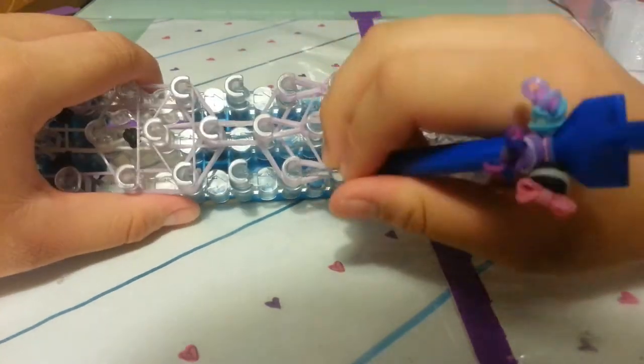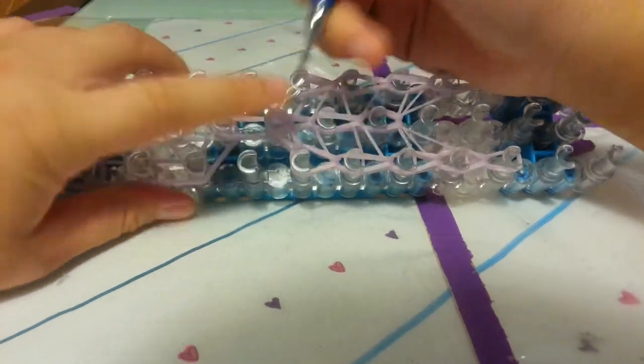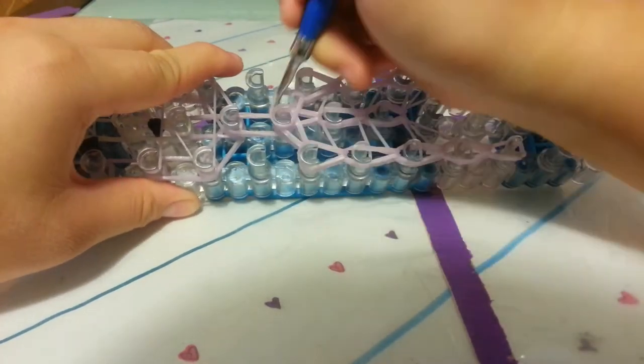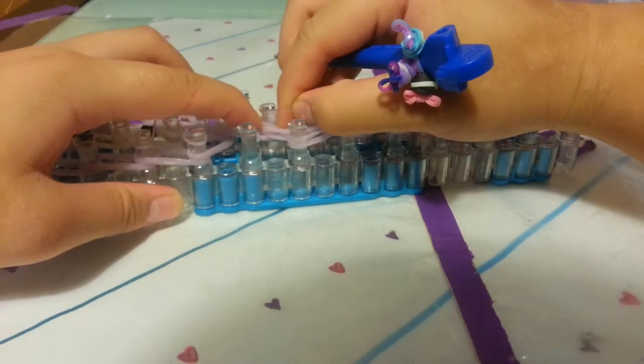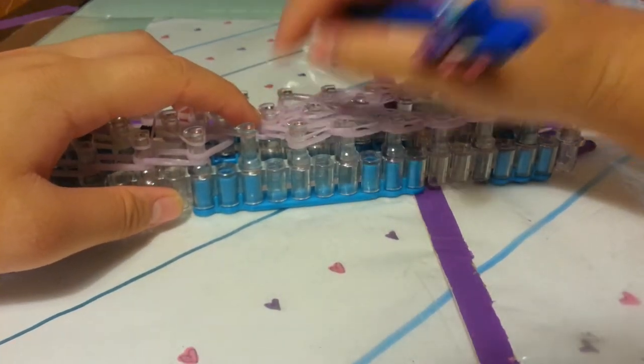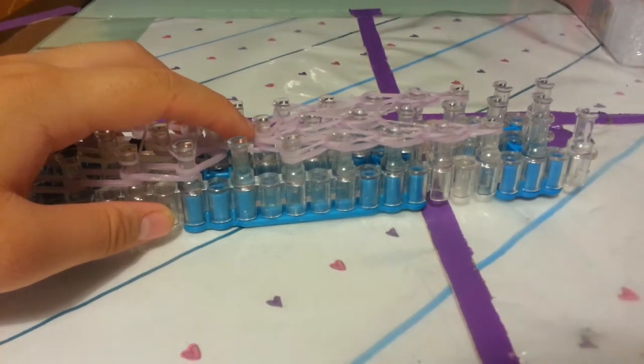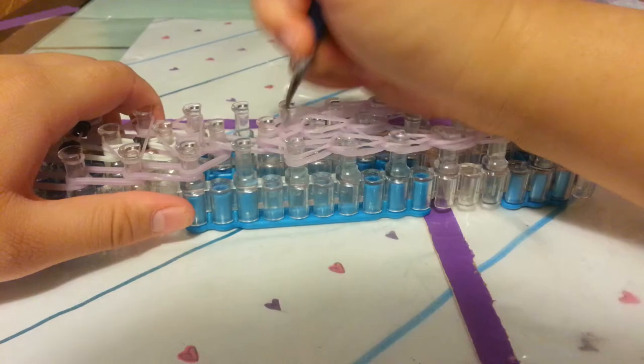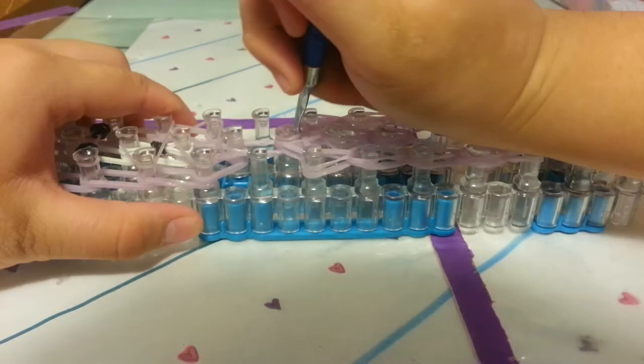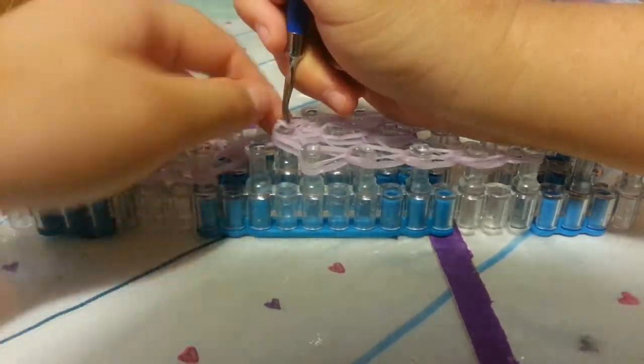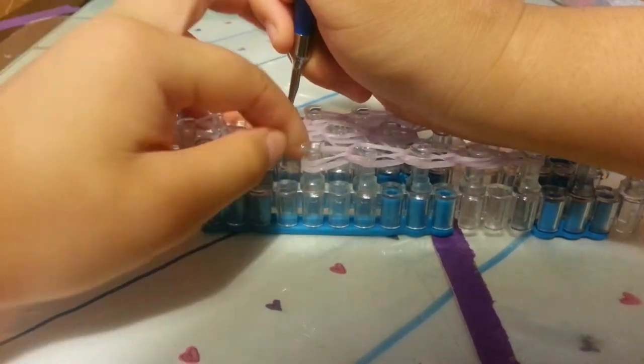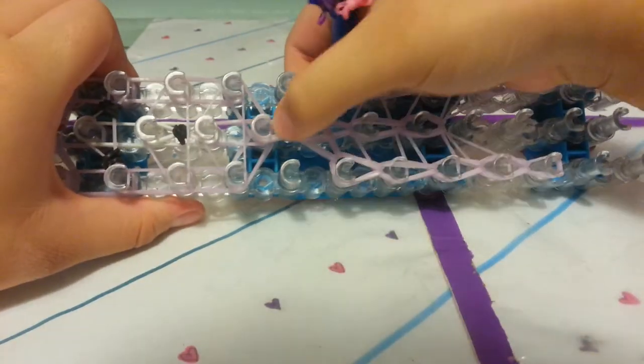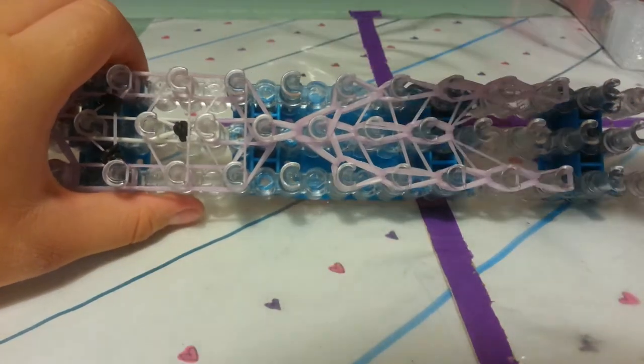You're going to go in this peg, grab the last two bands and loop towards the middle. And also on the other side, last two bands and loop towards the middle. I'm going to push these down because there's a lot of bands on these pegs. I'm going to go through all these bands. Hopefully I go through all the bands. Grab the cap band and there's a lot of tension on my hook. Push down your bands so they don't fall off the peg and loop them forward.